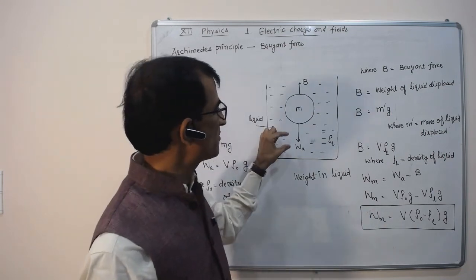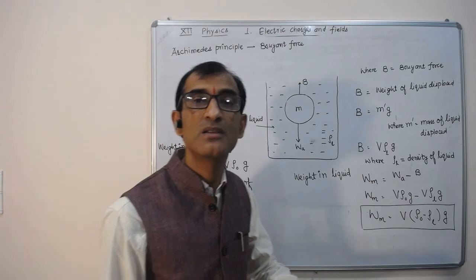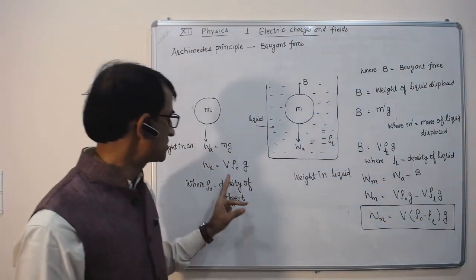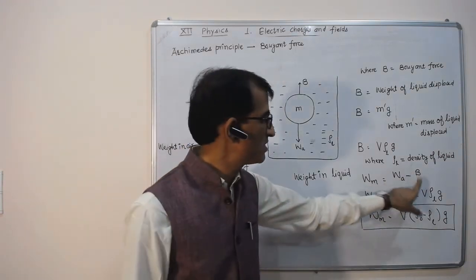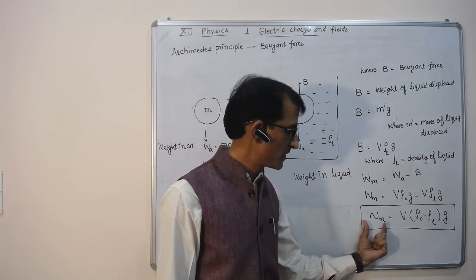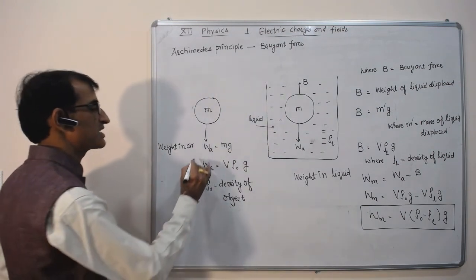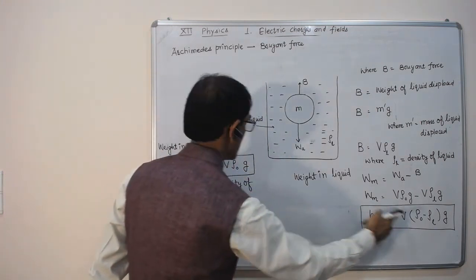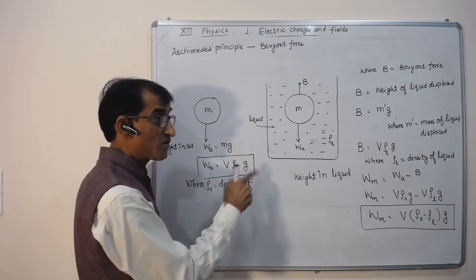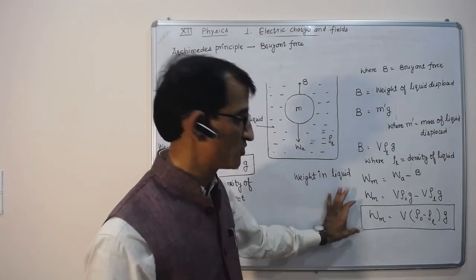The net force on the object in the liquid is: weight in air (W_A) minus buoyant force (B). W_A = V × rho-object × g, and B = V × rho-liquid × g. Subtracting gives the weight in medium W_M = V × (rho-object − rho-liquid) × g. So to find the weight in any medium, replace the object density alone with the difference of object density and liquid density.